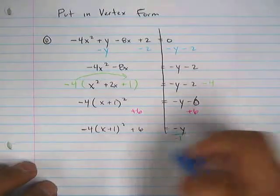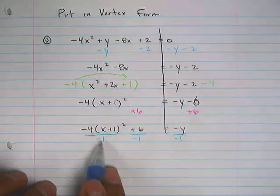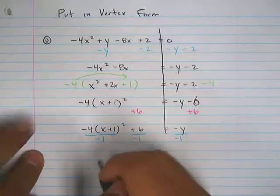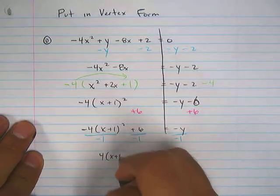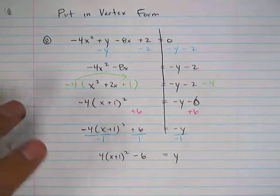Now divide everything by negative 1. Notice how when I'm doing this, I'm only focusing on these front pieces. Don't change anything inside. That way you have 4(x + 1)² - 6 equals y.